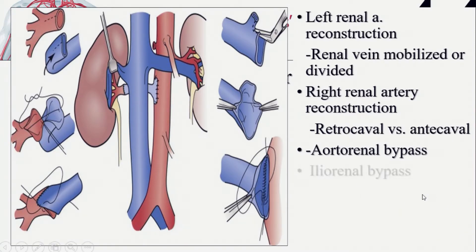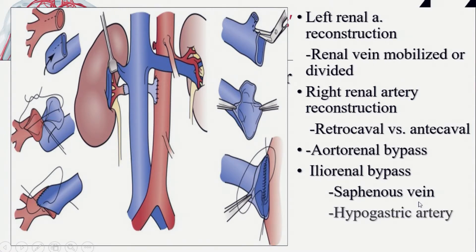If the aorta is inaccessible, you can do an ilio-renal bypass going down to the iliac. Ideally use saphenous vein. In children, use the internal iliac (hypogastric) artery as conduit — so that conduit and the renal artery grow together. Veins in children are too elastic and may dilate into an aneurysm, so in pediatric visceral bypasses always use an arterial conduit. Prosthetic conduit is an option of last resort.